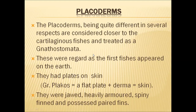The name Placodermi originated from two Greek words: 'placos' meaning a flat plate, and 'derma' meaning skin. As their skin possessed plate-like structures, they got this name. They had jaws and heavily armoured, flat plate-like structures on their skin. They also had spiny fins like cartilaginous fishes. Additionally, they possessed paired fins — something not seen in the earlier Ostracodermi group.